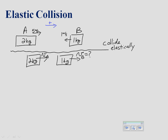The initial momentum of the system is 2 kg × (+5 m/s) plus the momentum of object B, which is 1 kg × (−1 m/s). Making that velocity negative is extremely important with momentum because momentum is a vector. So we have the momentum of object A: 10, plus the momentum of object B: −1, giving a total initial momentum of +9 kg·m/s.